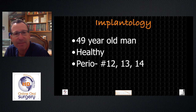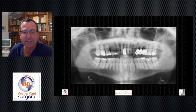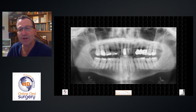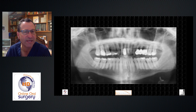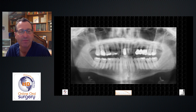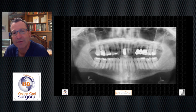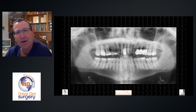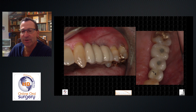Another case: a 49-year-old man came to my office — basically healthy — with periodontal involvement of teeth numbers 12, 13, and 14. The panoramic showed all three needed to go. I told him we'd need bone grafting and a sinus lift to place implants, and he really wanted three individual implants so he could floss between them. Between my fees and the restorative dentist's fees, he decided to go elsewhere. He showed up about six months ago with a prosthesis in place — a three-unit bridge on two implants.